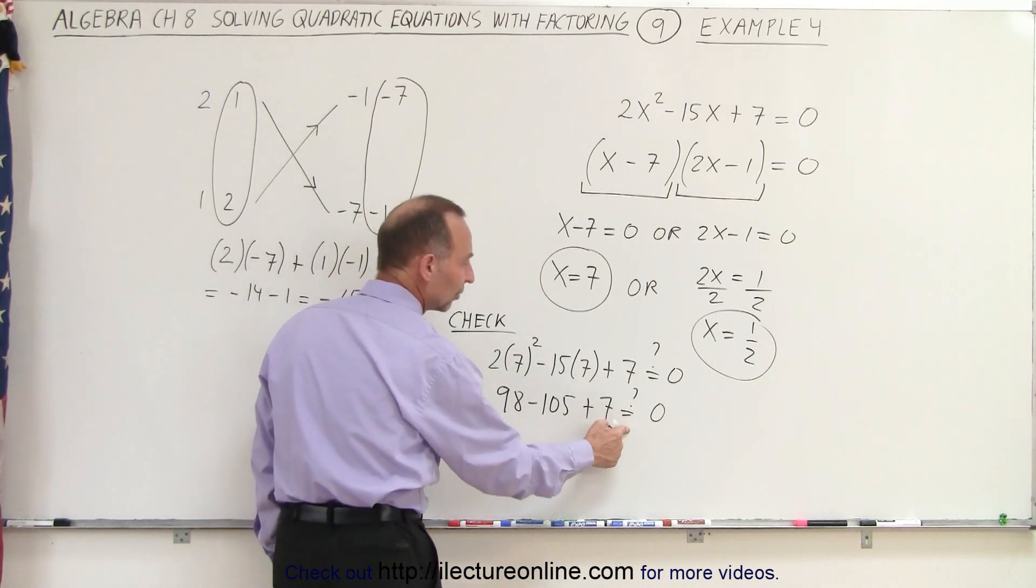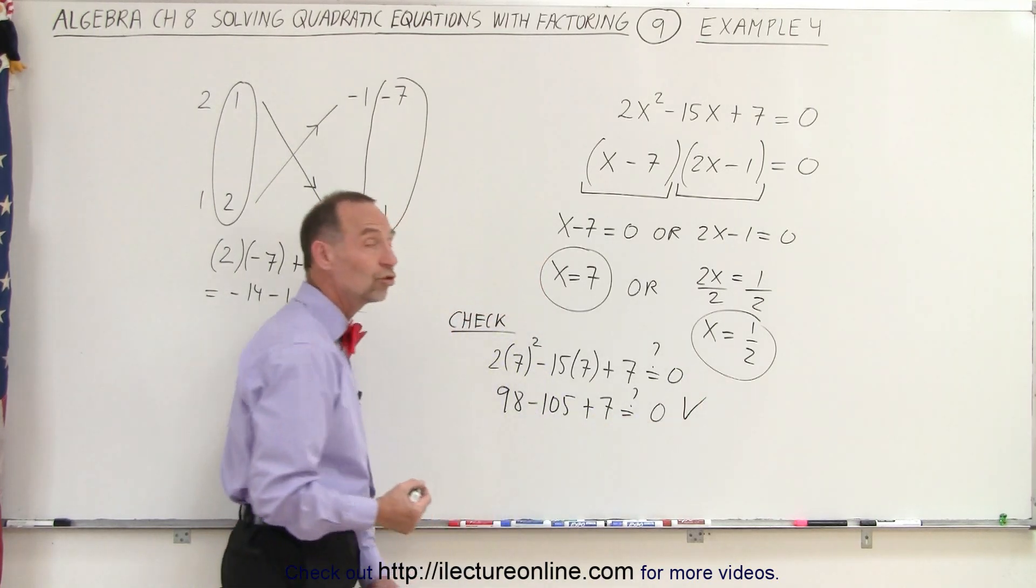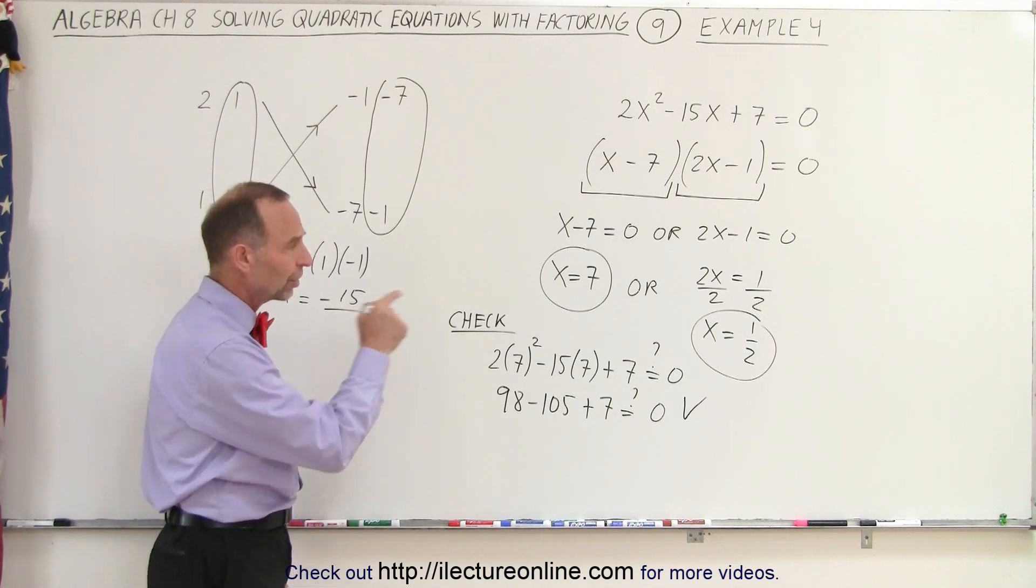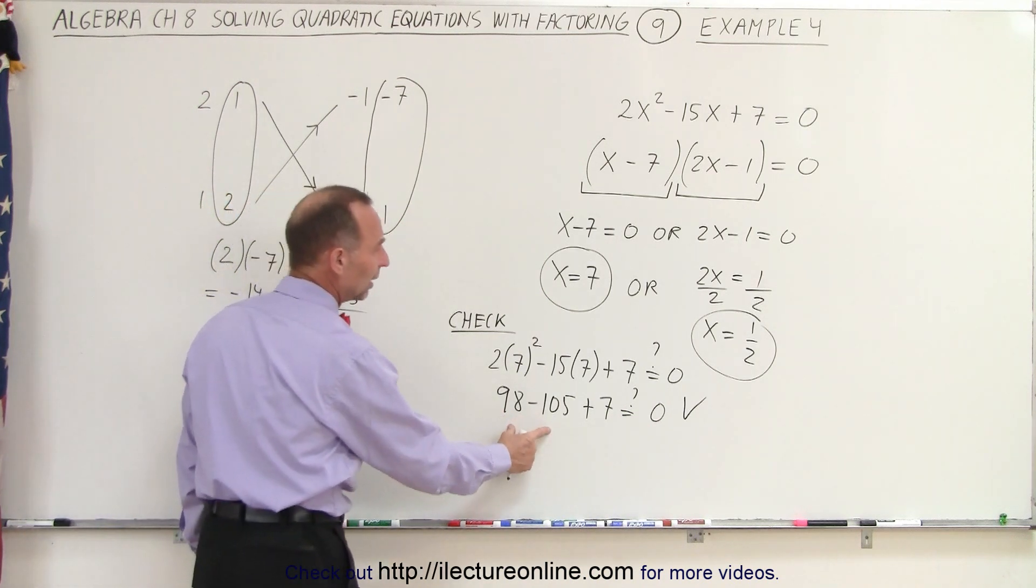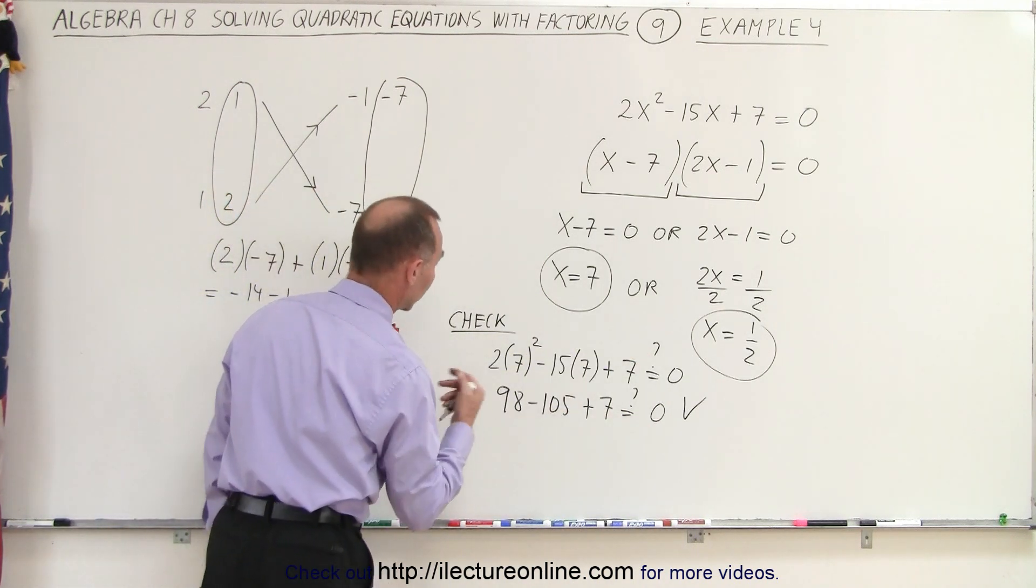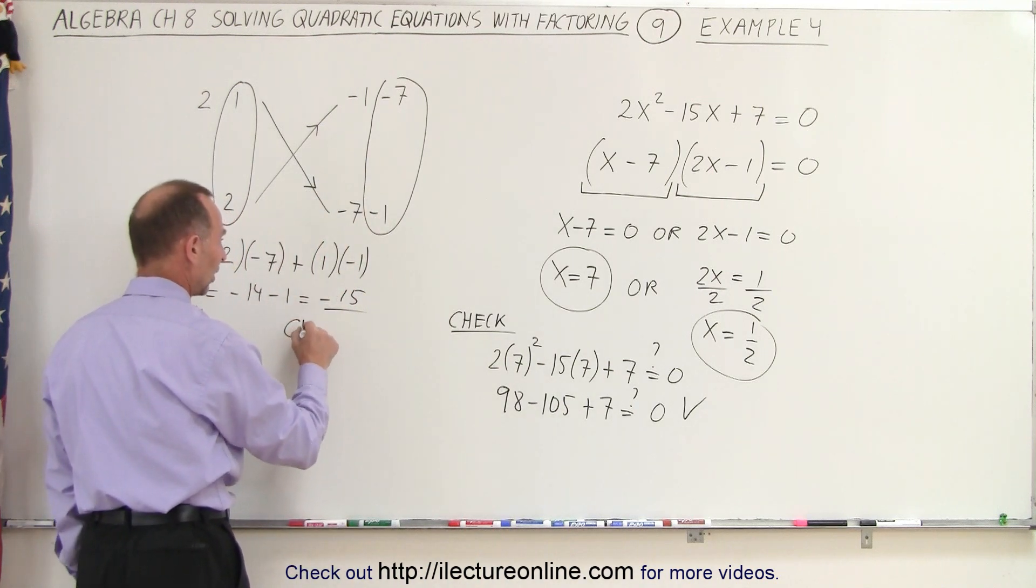Well, 98 plus 7 is 105. 105 minus 105 is equal to 0. So that checks. That is okay. What about the other one? Because just because 1 is correct, that doesn't mean the other one is correct. So let's try that one. We're going to check the second answer.